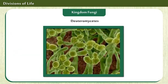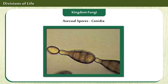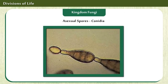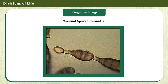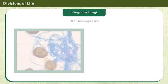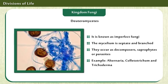Deuteromycetes are classified under Kingdom Fungi. They reproduce by asexual spores called conidia. Some of their important features are displayed on the screen.